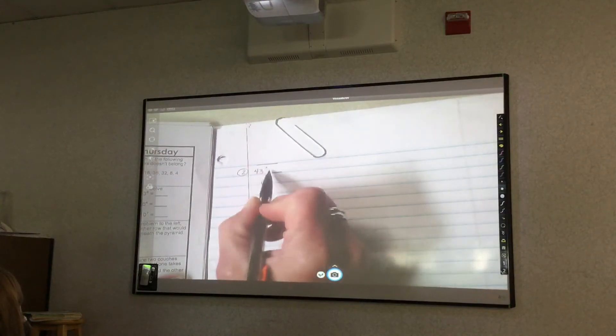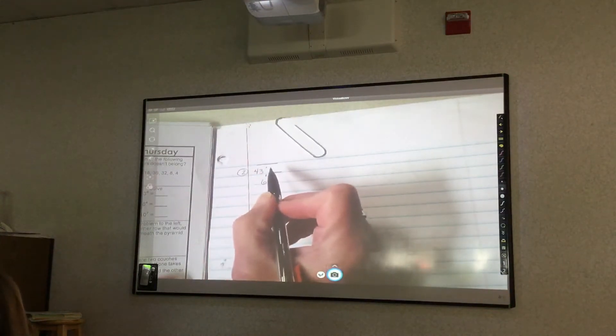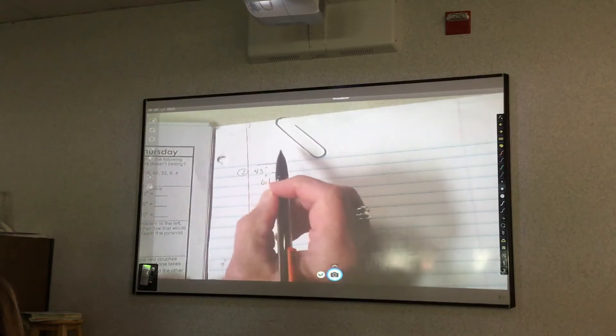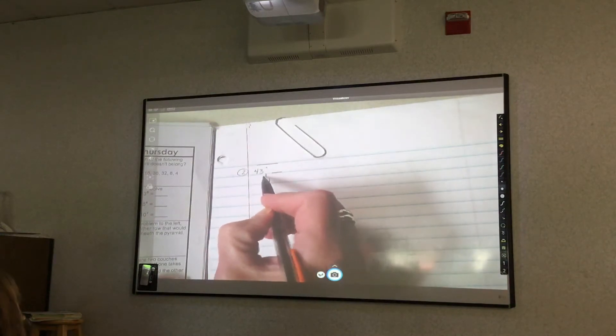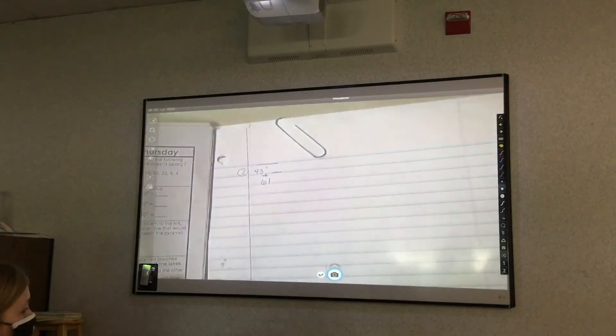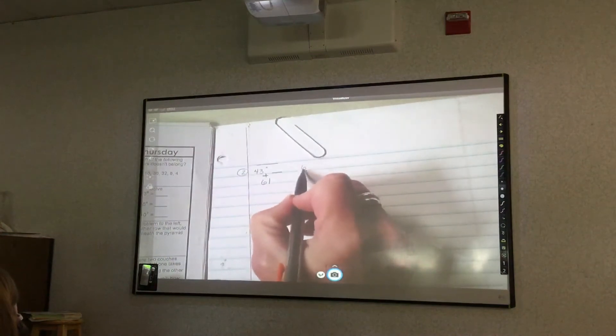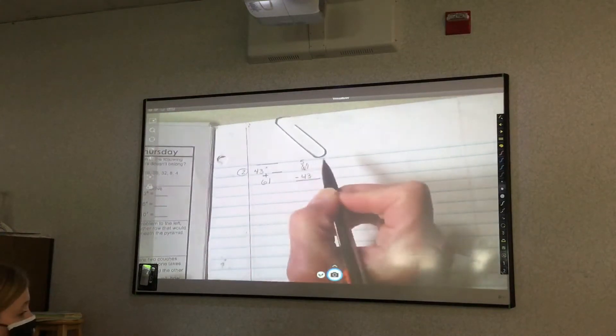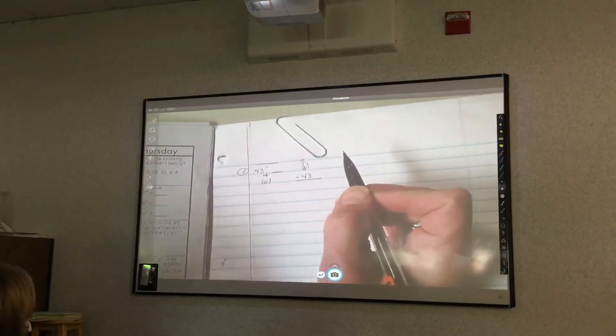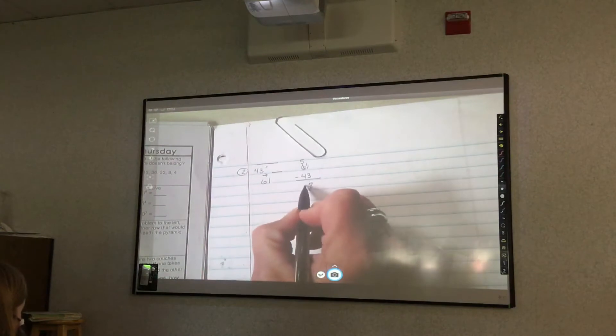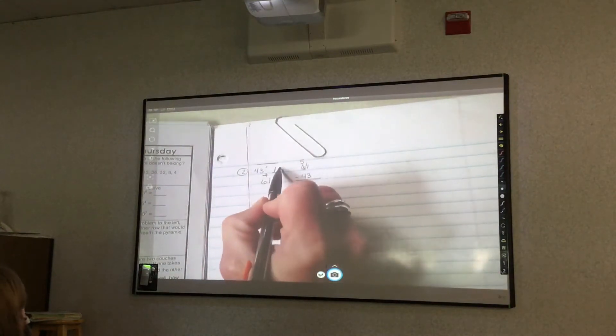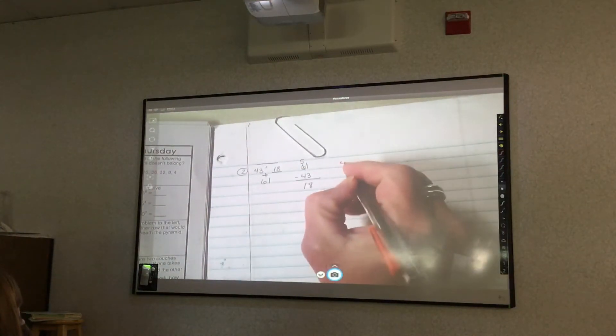You cannot start with the multiplication, because these are going to be a lot bigger numbers. So I would start by doing the opposite of addition, which is subtraction. So I'm going to take my 61 minus 43. 6 becomes a 5, 1 becomes 11, and 11 minus 3 is 8. So I know 18 goes here. Then I should take 43 times 18.